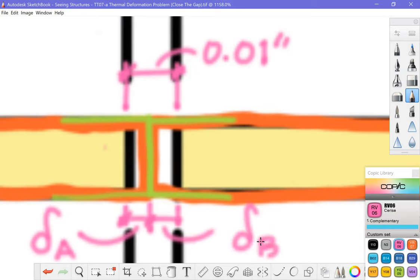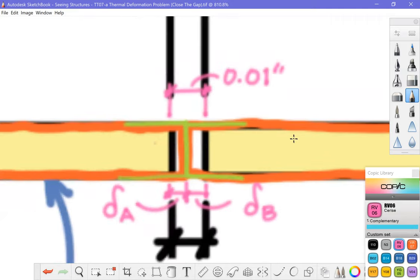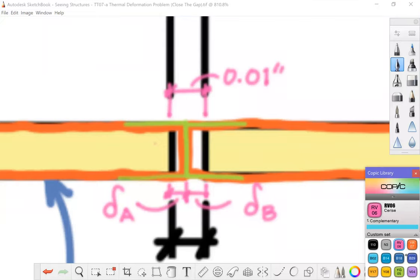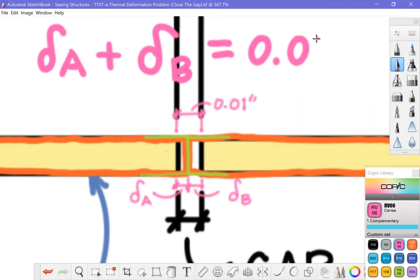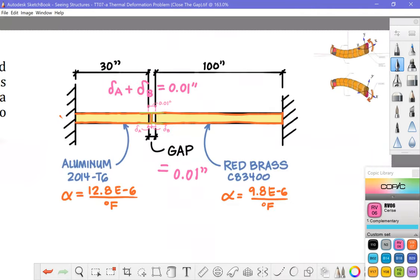and the brass, I'll use A and B for subscripts here, it's almost like I planned it this way, the brass is going to extend a little bit more and so from looking at this extreme close-up we see that the one equation we're going to need to solve this problem is this idea that the deformation in the aluminum plus the thermal deformation in the brass, that's going to have to sum up to the gap. That's going to give us a way to solve for our temperature.